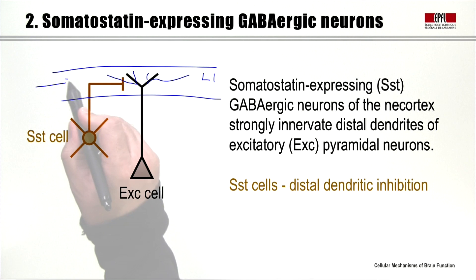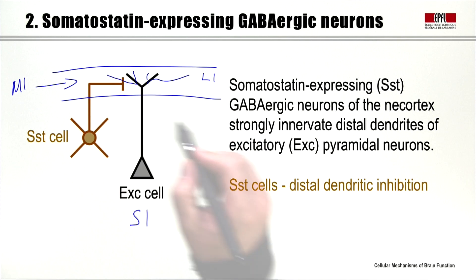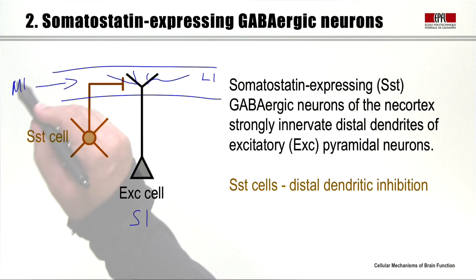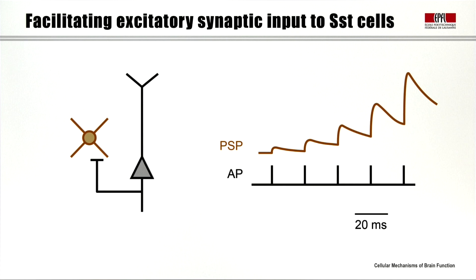There are very interesting inputs that arrive in layer 1. For example, in the primary somatosensory cortex of the mouse, signals from the motor cortex arrive specifically in layer 1. It may be that the somatostatin cells are specifically involved in gating the input of motor information into the primary somatosensory cortex — a very interesting role of this distal dendritic innervation that somatostatin cells might drive.